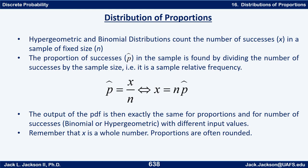If we know p-hat we can find x, and if we know x we can find p-hat, given the sample size n. Knowing any two of these variables we can find the third. One word of warning: x must be a whole number. If you multiply n times p-hat and it does not turn out to be a whole number, that means p-hat was probably rounded off. We absolutely have to have a whole number for x.